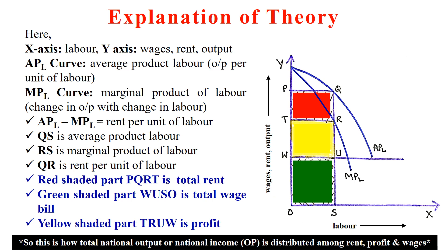On the x-axis we have labor, and on the y-axis are wages, rent, and output. The curve APL is the average product of labor, that is output per unit of labor. The curve MPL is the marginal product of labor, that is change in output with change in labor. The difference between APL and MPL is the rent per unit of labor. QS is the average product of labor and RS is the marginal product of labor.